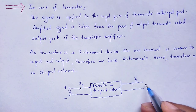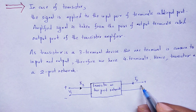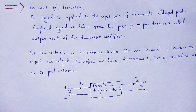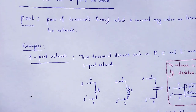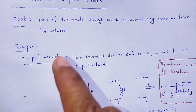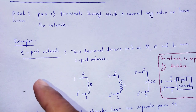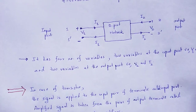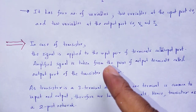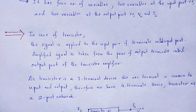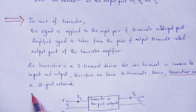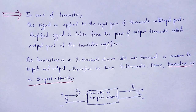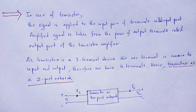So with the help of this video lecture, you understand the concept of transistor as a two-port network, what is a port, examples of ports like one-port network and two-port network, and as a result we call a transistor a two-port network. With this useful and informative session, let me wind up. Thank you.